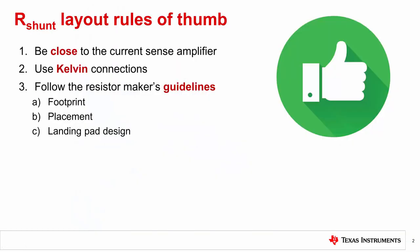The layout of a shunt resistor with respect to a Current Sense Amplifier should follow these three rules of thumb. Be close to the Current Shunt Monitor. Use Kelvin connections. Follow the resistor maker's recommendations as applicable with regards to footprints, placement, and landing pad design.